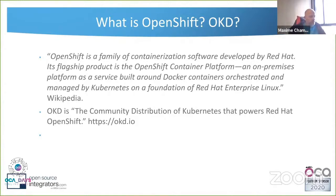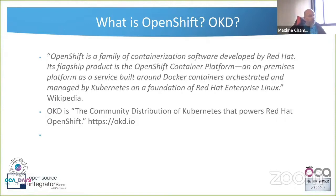With OpenShift you get an environment to run your Docker containers with all the Kubernetes services. On top of that you get a Jenkins implementation for continuous integration and continuous deployment, and an image registry within OpenShift so you don't need to push your Docker images to Docker Hub or another public registry. It really streamlines all the processes by having everything in the same cluster to build, configure, deploy, and run containers.